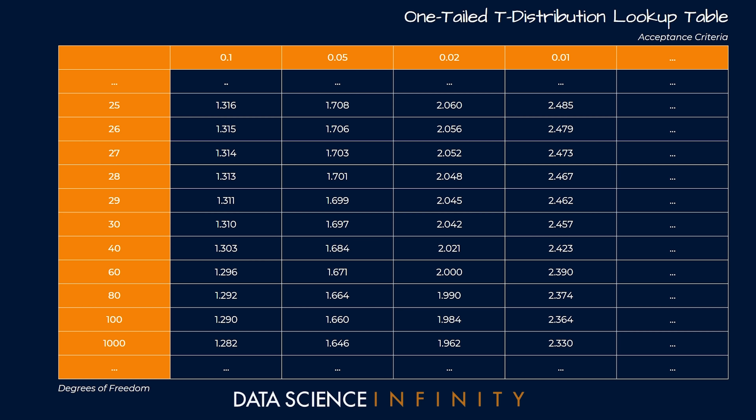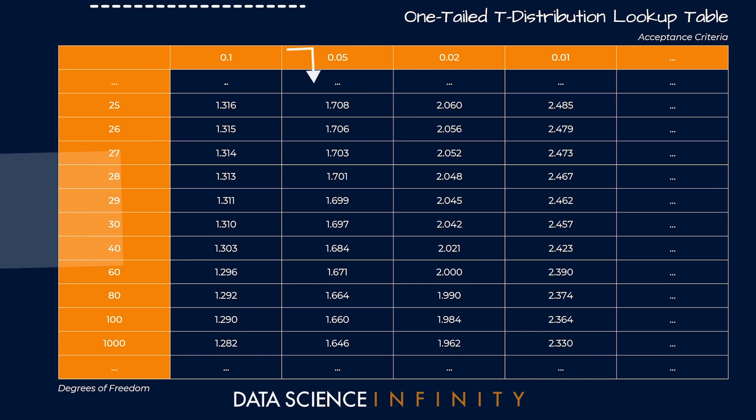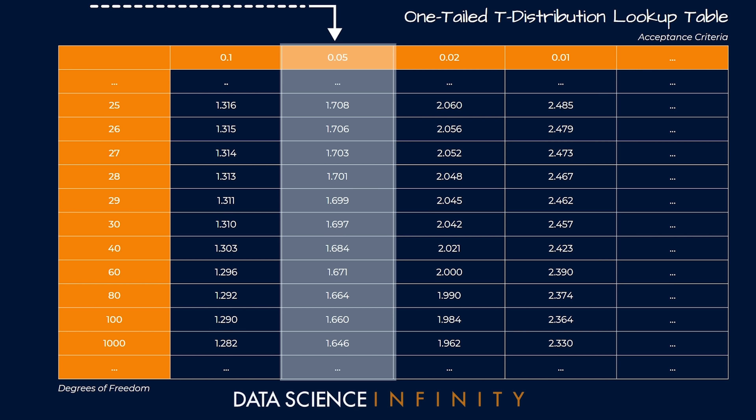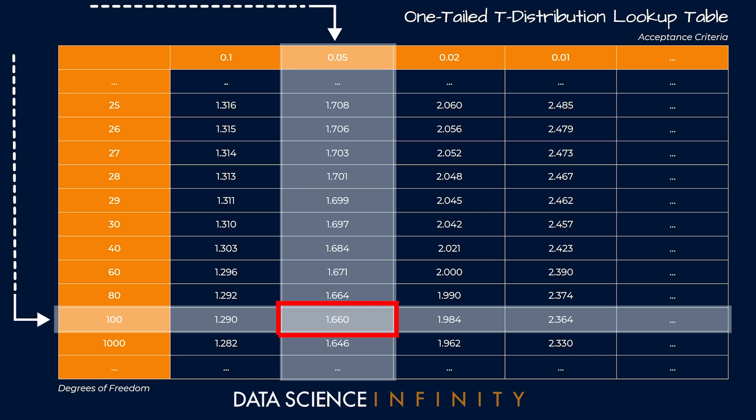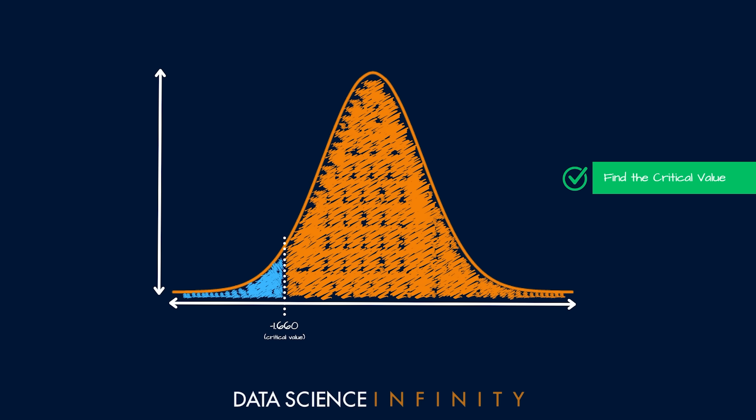With degrees of freedom calculated, we head to the one-tailed t-distribution lookup table. We go along the top to our acceptance criteria of 0.05, then down to our degrees of freedom. Since 113 isn't in the table, best practice is to use the closest smaller value, which is 100. Where those two values cross, we find our critical value of 1.660 — the point that splits the area with 5% on one side and 95% on the other. Since we're interested in the left-hand side, we take this as negative 1.660.